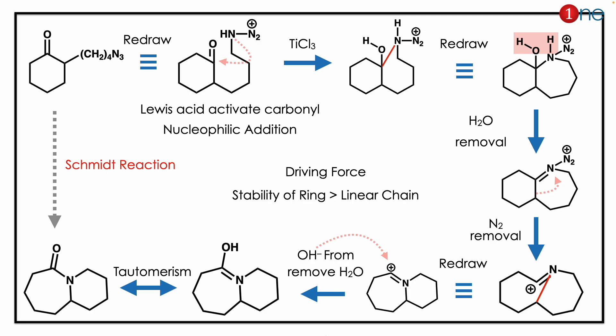N2+ leaves with assistance from the nearby carbon, giving ring expansion and ring contraction, forming a cation. The cation is then quenched as the oxygen attacks, giving the enol form, which can be rewritten as a carbonyl.